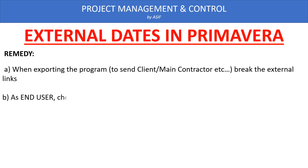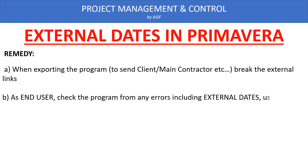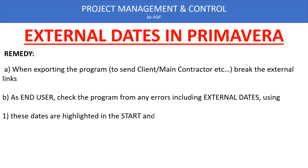Number two: as an end user, when you receive a program from any contractor, supplier, or subcontractor, you have to check it for all these errors, including external dates. To check whether the program is affected due to external dates, there are several ways. Number one is to show the start and finish columns in the layout. In the start and finish layout, all activities which have constraints are marked as static.